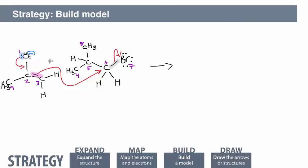Now it's time to draw the product. First, redraw everything that has not changed between the two molecules. Then start to add in the new bonds. For example, between the oxygen and C2.